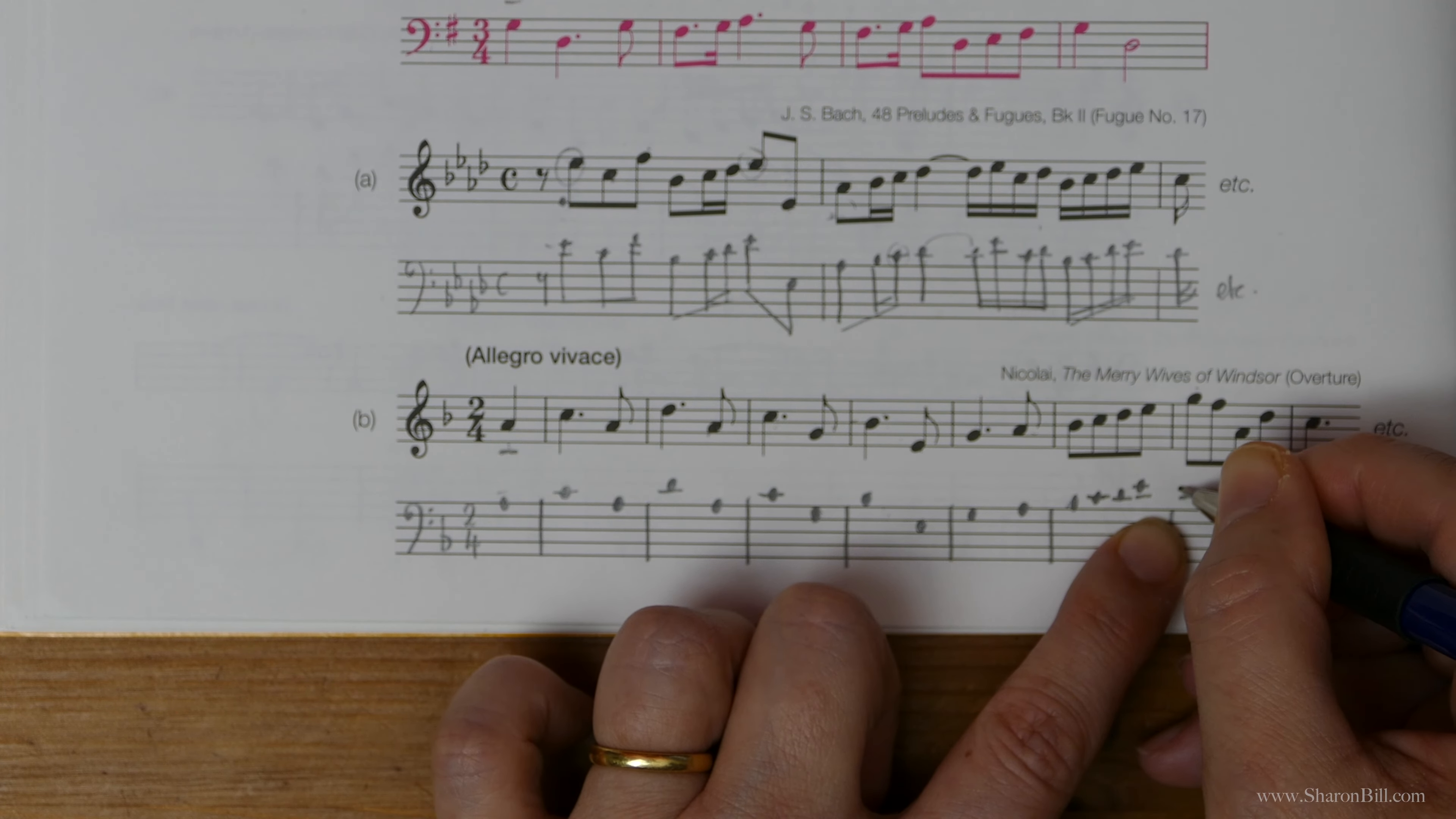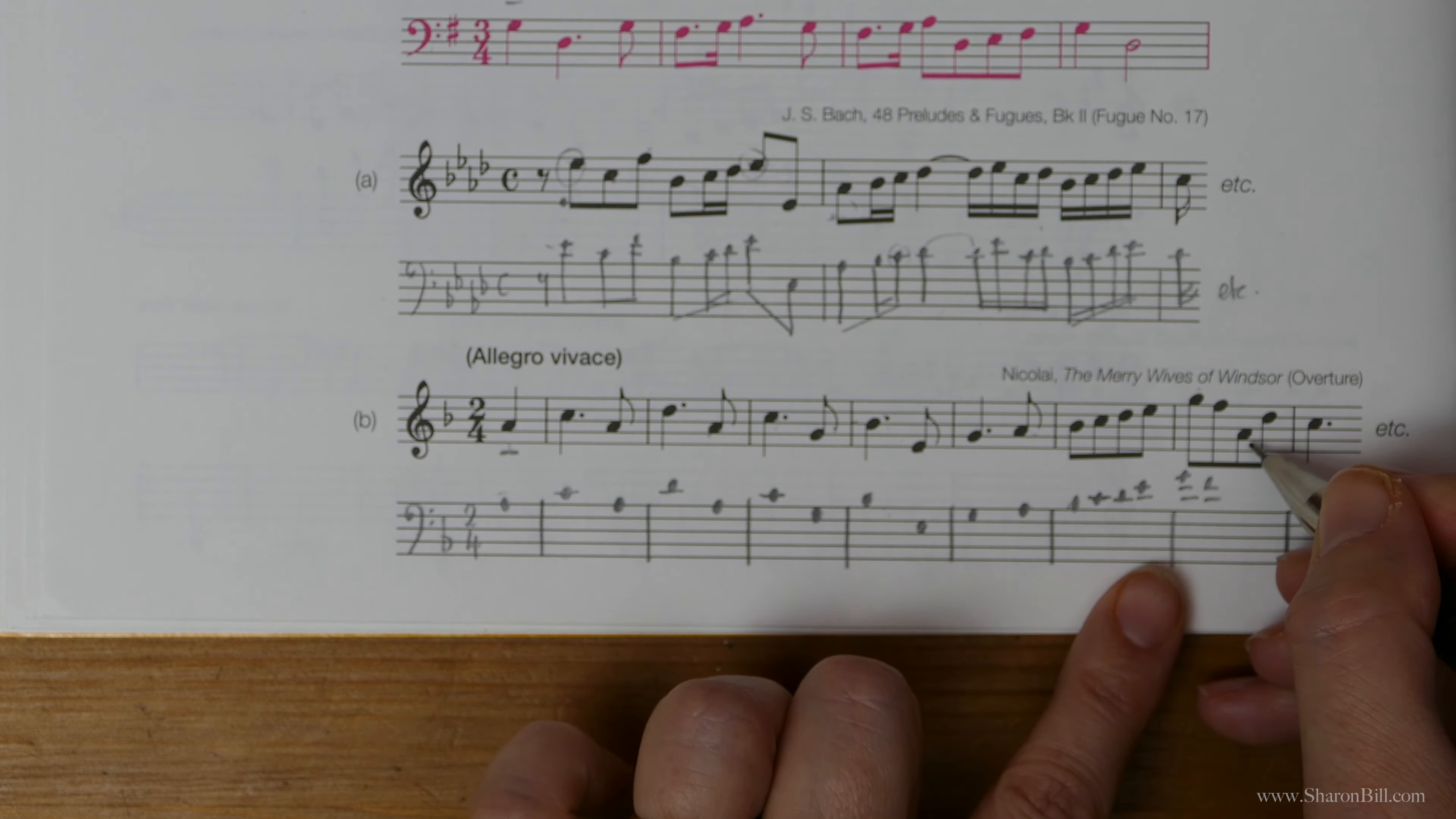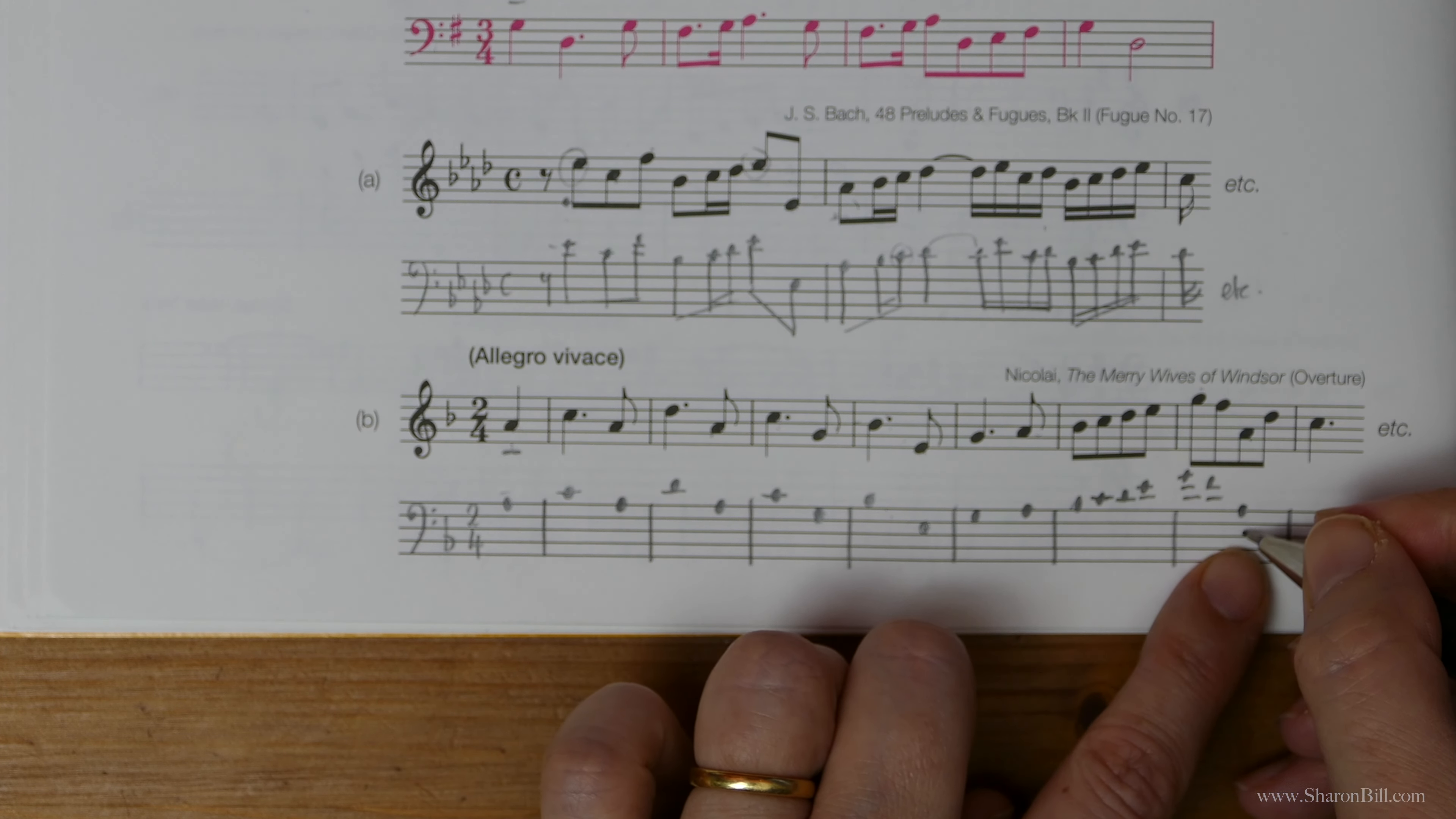And now we're going up three notes from E to G. So we're going to need one, two, three ledger lines. Down a step. Now here, this is the A that we got started on. So that takes us all the way to there. We can double check we've gone right because we've got one, two, three, four, five, six. So we know we're right.